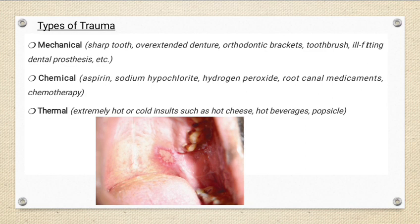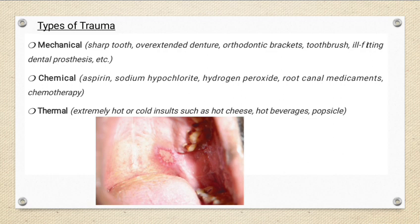Another cause is chemical trauma. The most common chemical cause for oral ulceration is a patient placing aspirin in the vestibule near the tooth, causing a painful condition. Chemical burns can also be caused by the dentist using highly concentrated materials such as sodium hypochlorite during root canal treatment, and hydrogen peroxide during teeth whitening procedures. Other root canal medicaments and chemotherapy chemicals can also cause chemical ulcers.